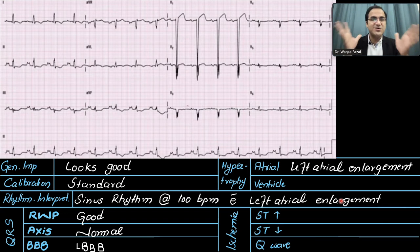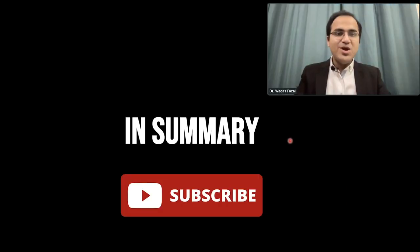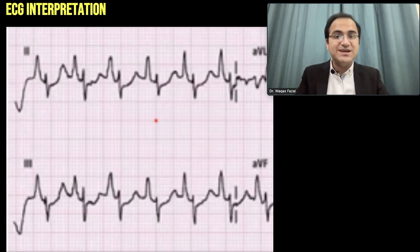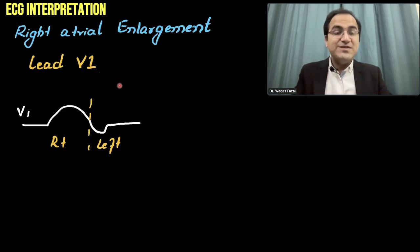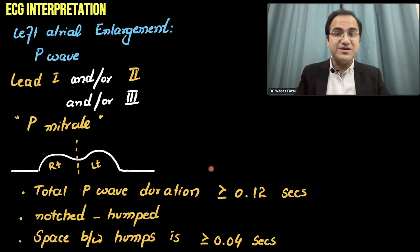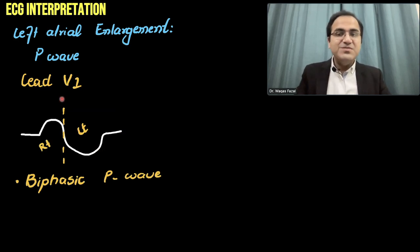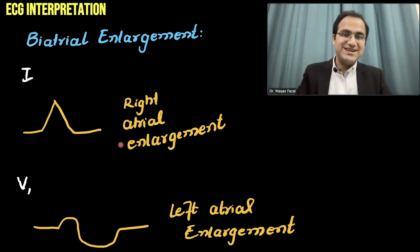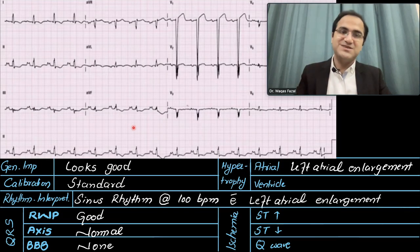In summary, we talked about atrial hypertrophy: right atrial hypertrophy showing P pulmonale on ECG, lead V1 showing a biphasic P wave, and causes of right atrial enlargement. Then we talked about left atrial hypertrophy showing P mitrale, the biphasic P wave in V1, biatrial enlargement showing features of both, and the causes of left atrial enlargement. We solved ECG examples using the six-step method. Check out the other videos in this ECG interpretation series — links are in the description below.